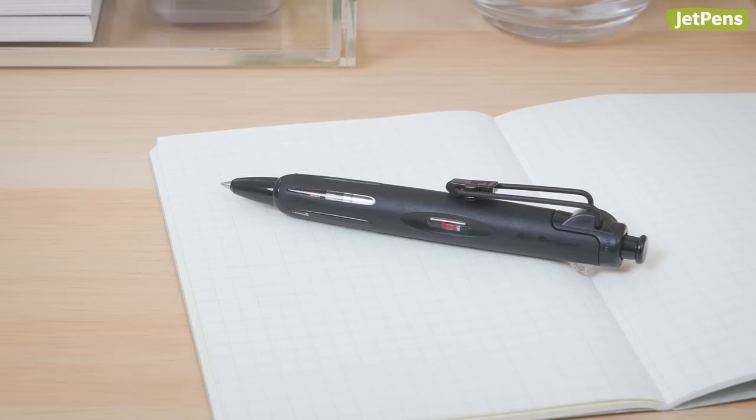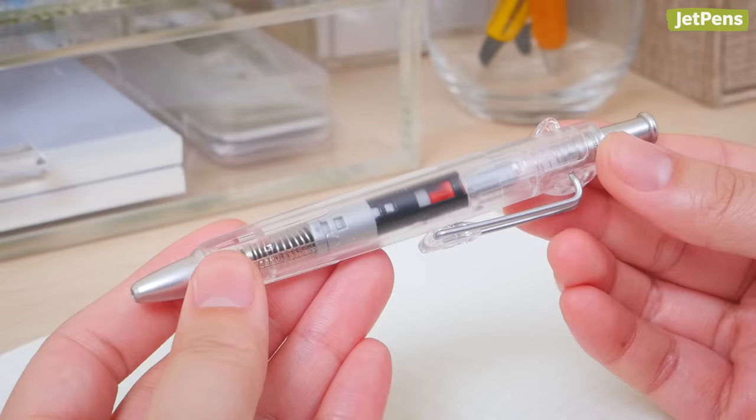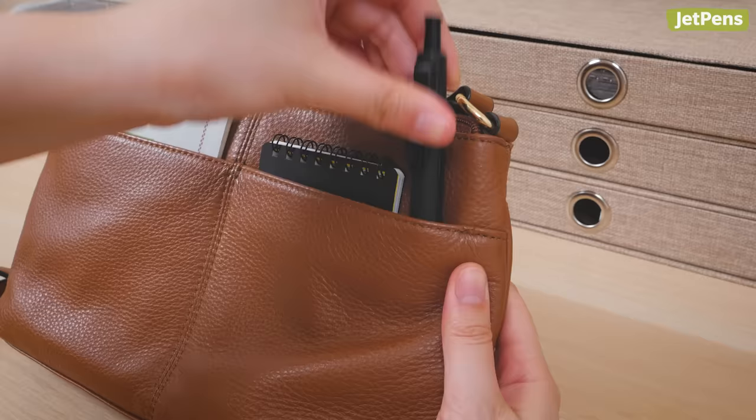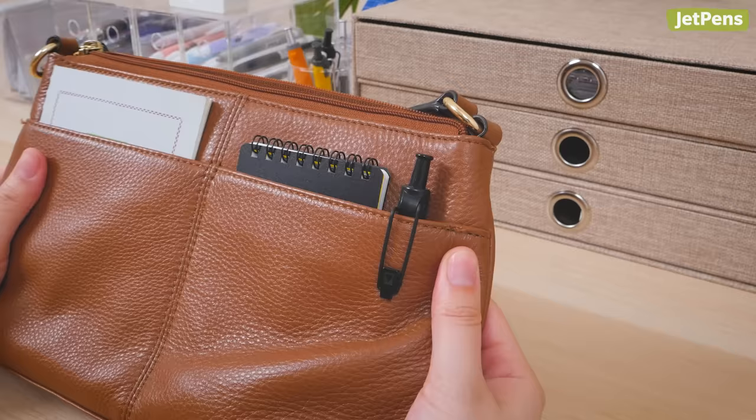The Tombow AirPress is pretty unique. Unlike the other pens that use a pressurized refill, each time you click the pen, air pressure is injected into the ink refill. The AirPress does require a considerable amount of pressure to write, so it's best for quick notes. With its compact size and sturdy wire clip, it's the perfect pocket or everyday carry pen.